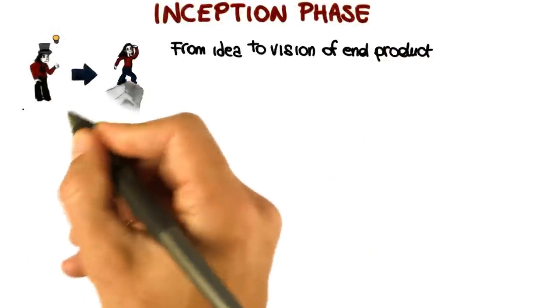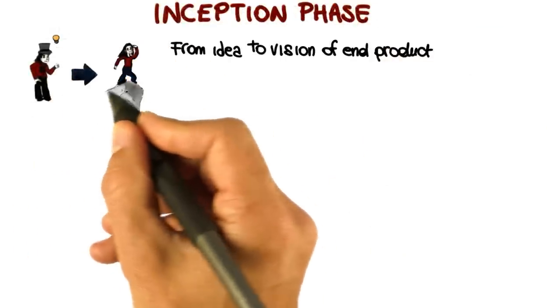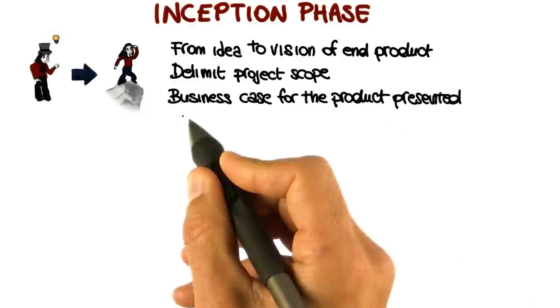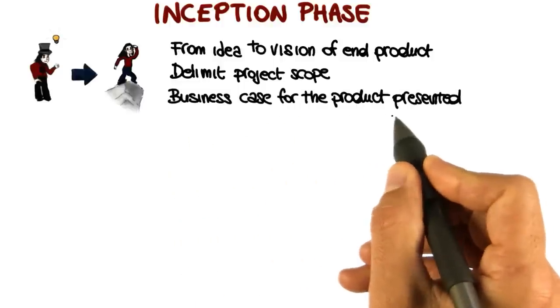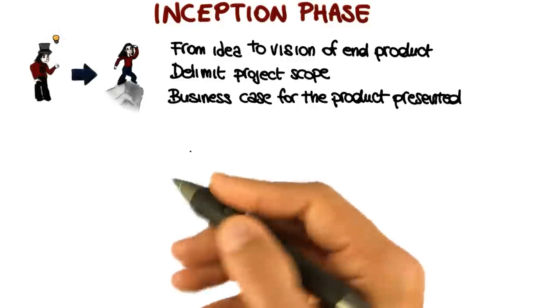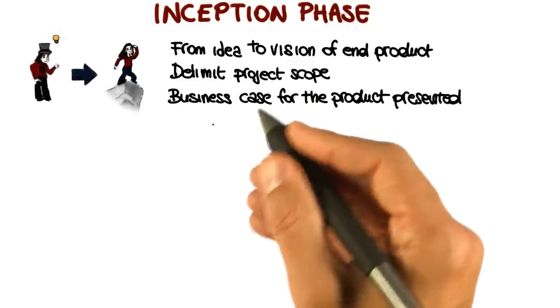The first phase goes from the idea of the product to the vision of the end product. What this involves is basically delimiting the project scope and making the business case for the product considered. Why is it worth doing? What are the success criteria? What are the main risks? What resources will be needed? And so on.